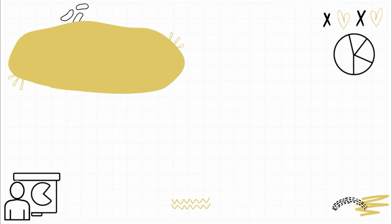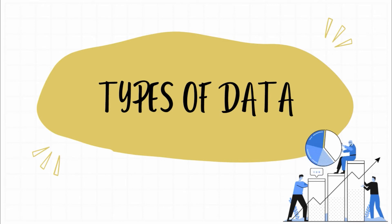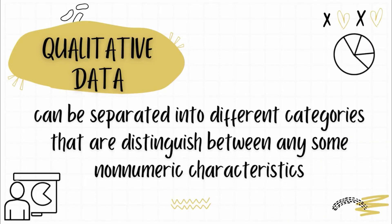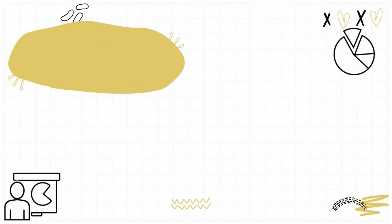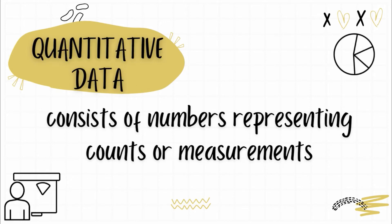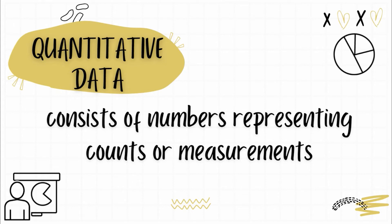Now, there are two types of data. The first one is qualitative data. Qualitative data can be separated into different categories that are distinguished by non-numeric characteristics. Take note: qualitative data comes from the word 'quality,' meaning it's about categories with no numeric values. The other type is quantitative data. Quantitative data consists of numbers representing counts or measurements. When we say quantitative data, simply look for a number — if there's a number, that's already quantitative data.